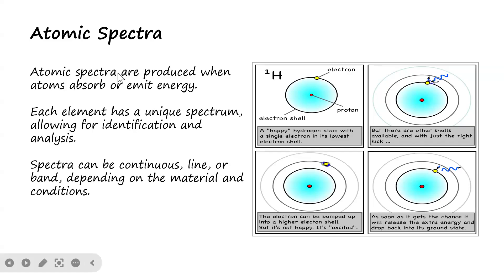Atomic spectra is produced when atoms emit or absorb energy. Whenever there is energy emission or energy absorption by an atom, spectra of light are produced. Each element has a unique spectra.